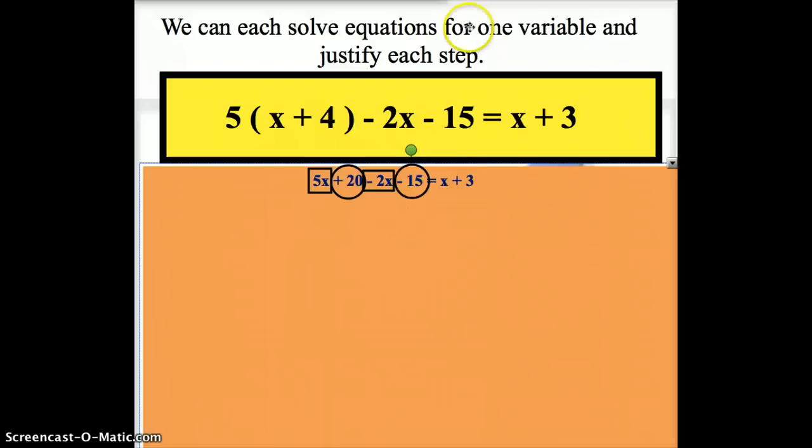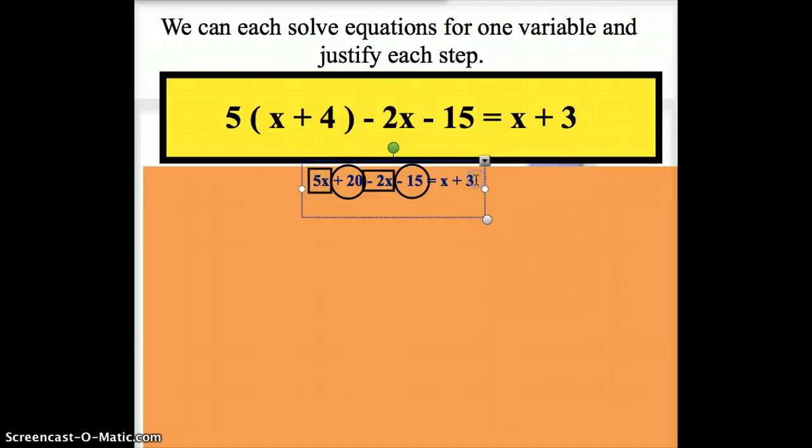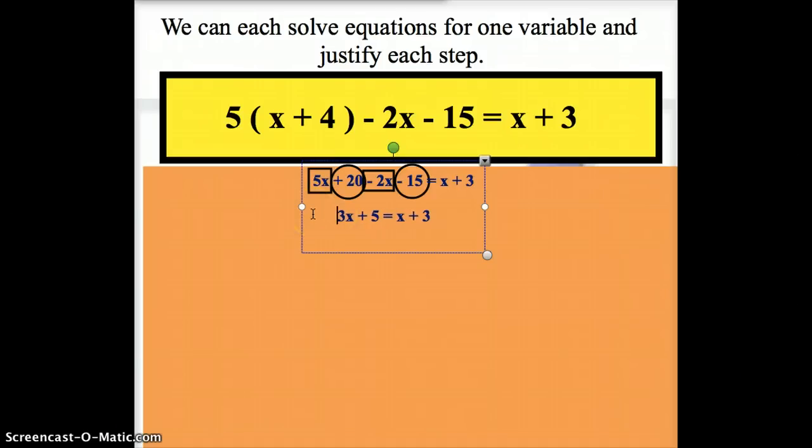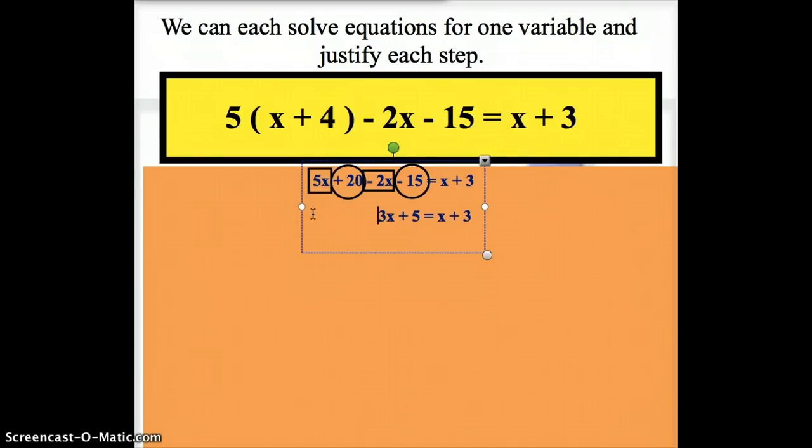So, when I do that, when I combine my like terms, my 5x and my 2x make positive 3x. My positive 20 and my negative 15, the difference on those two is a positive 5. You might notice on the left side, I've done nothing on that side. So, I'm sitting here with 3x plus 5. And we'll kind of center this over here a little bit. 3x plus 5 equals x plus 3. Hopefully that makes sense.